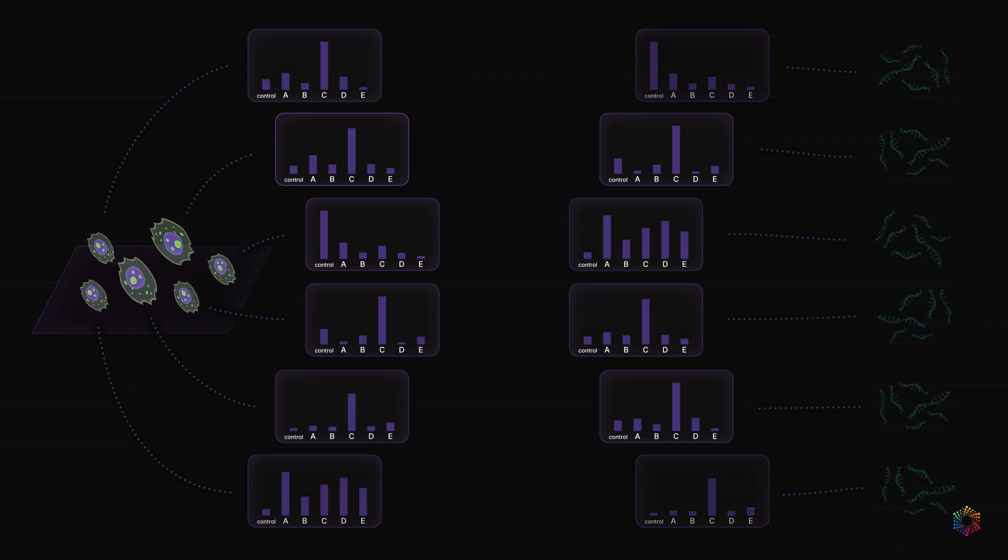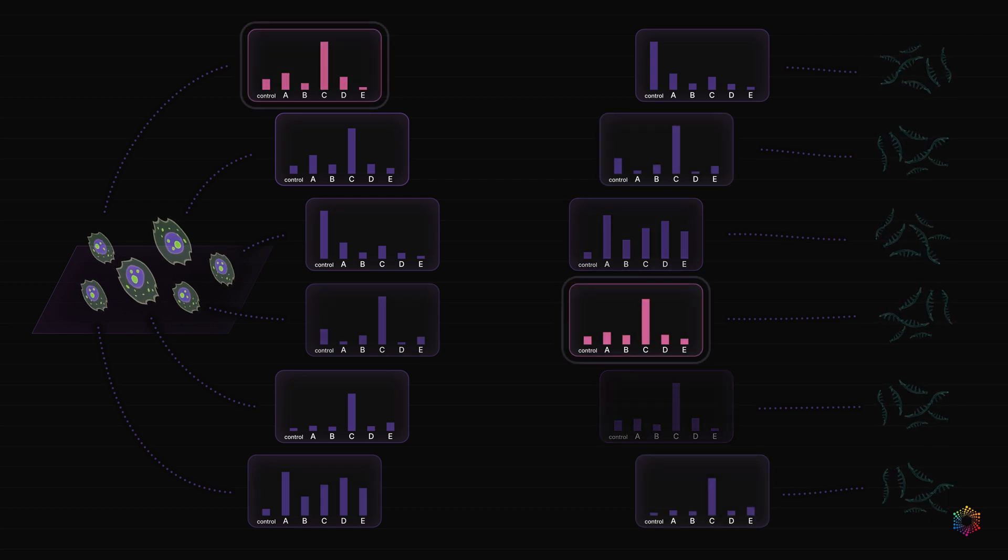For example, for this cell, the classifier does a good job of predicting which specific gene was knocked out, in this case, gene C.